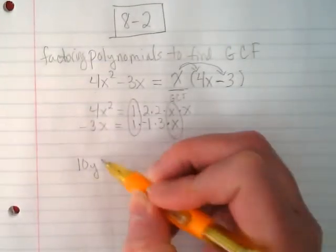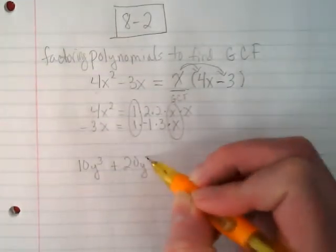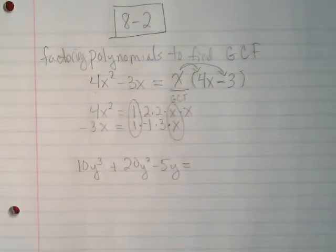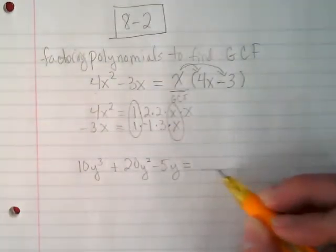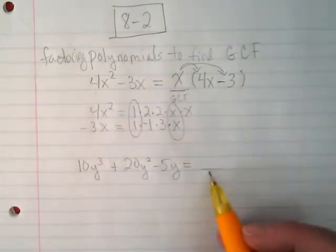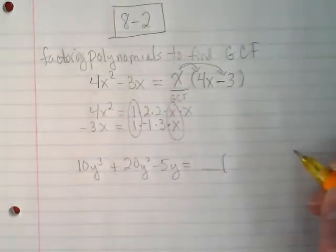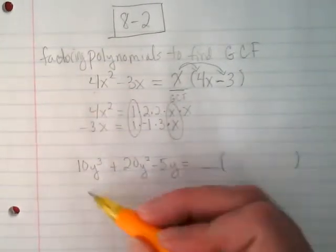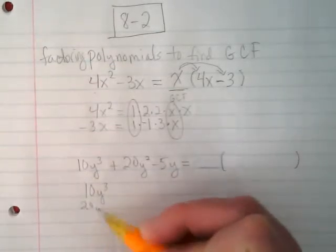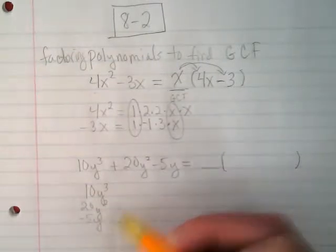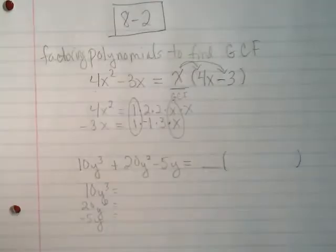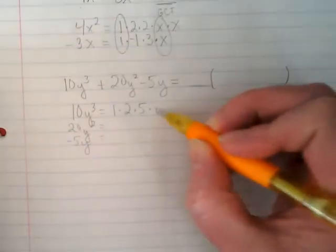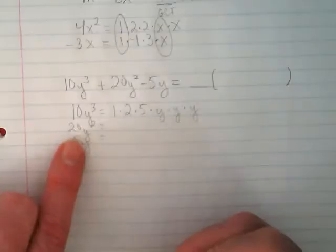Let's try 10y to the third plus 20y squared minus 5y equals. And we're going to leave that space open for the equals. We're going to find what the GCF is and put it here. And then we're going to have a parentheses that's going to have three terms in it. Underneath, let's break down each of these terms and see what its parts are.